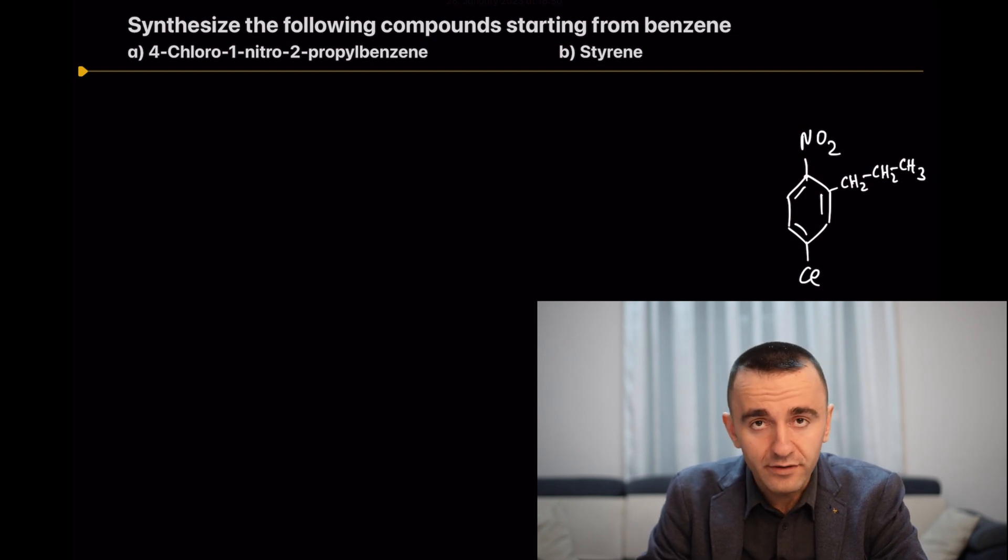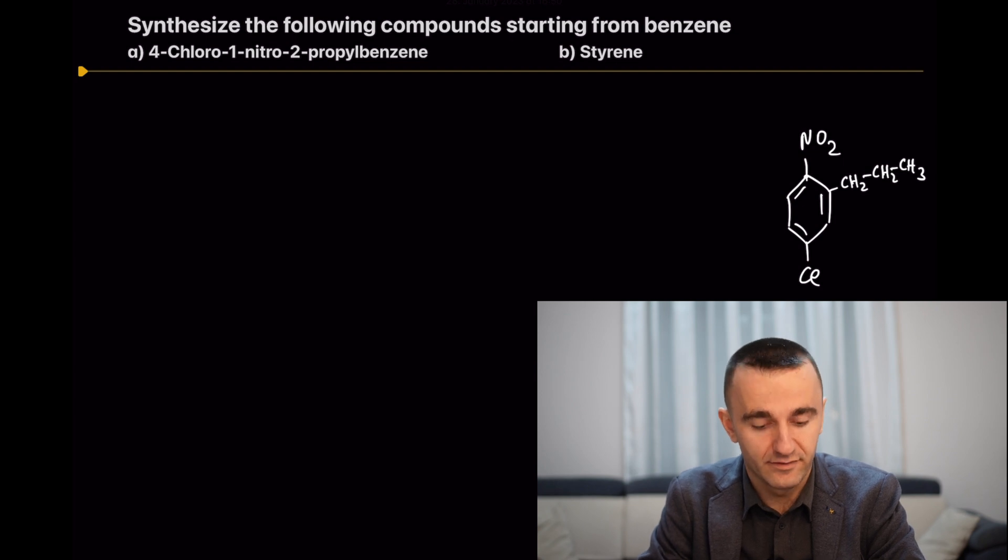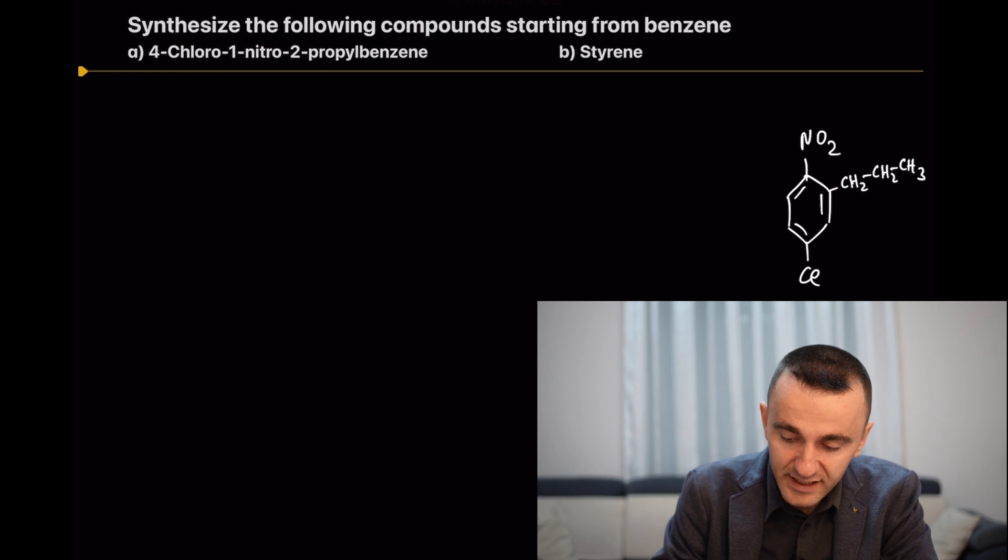In organic chemistry synthesis, the best strategy is to work backwards. In the lab, of course, you cannot go backwards, but on paper you can, and it's very helpful to understand which group you need to remove step by step until you reach the first compound that you start the synthesis.